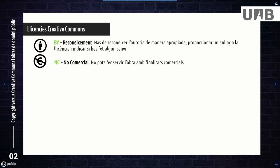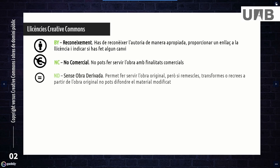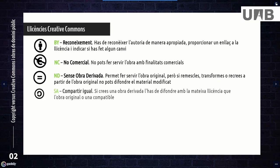NC: non-commercial — we are not allowed to gain financial benefit. ND: no derivatives — we cannot create and distribute a derivative work without asking permission from the author. SA: share alike — we must use the same license if we create a derivative work. This condition is intended to disseminate Creative Commons licenses.